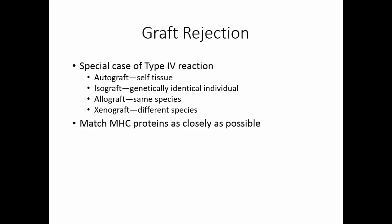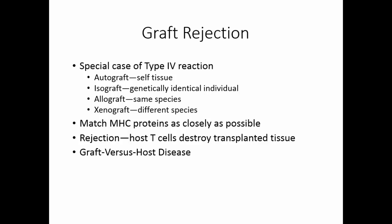When we're doing an allograft, we have to very carefully match those major histocompatibility complex proteins — we need them to match as closely as possible. Rejection occurs when the host T cells destroy the transplanted tissue, which of course defeats the purpose of the transplant. There is another kind of rejection called graft versus host disease, and it occurs primarily in bone marrow transplants.